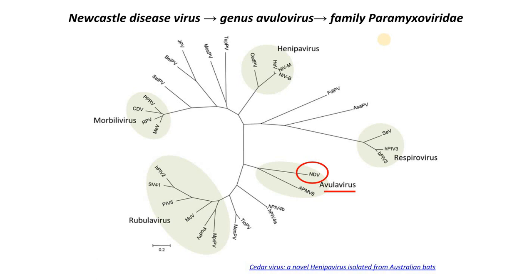It's important to recognize this comparative aspect, because knowing that Newcastle disease virus belongs to the same family as canine distemper virus will give you a quick hint that Newcastle disease virus is capable of infecting different tissues, and that intracytoplasmic and intranuclear viral inclusion bodies are expected features, as we will see later on in this video.